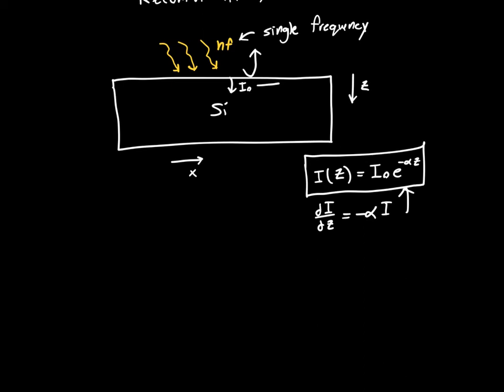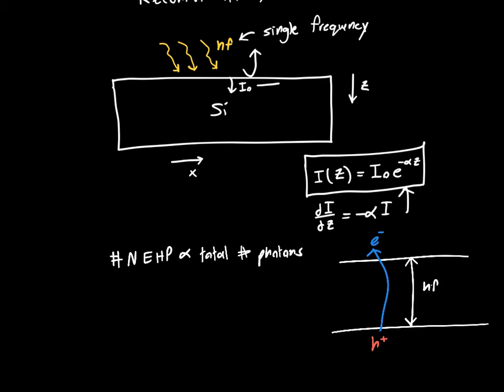So we also expect that the number of electron hole pairs generated is just proportional to the total number of photons, because we know that each photon, if it interacts with a single electron, it's going to give it enough energy to jump from the valence band to the conduction band and leave behind a hole. That is assuming that the light does have enough energy to do that. So we're assuming that hf is bigger than the band gap Eg, and this is the conduction band, this is the valence band.